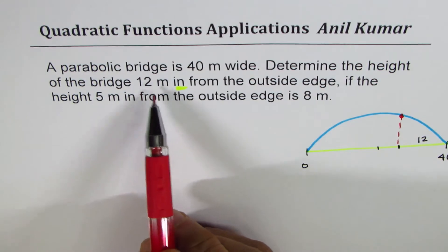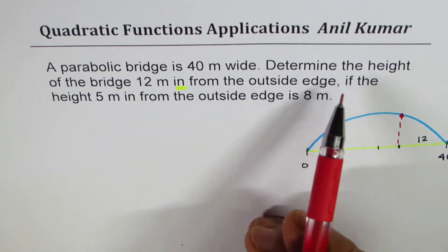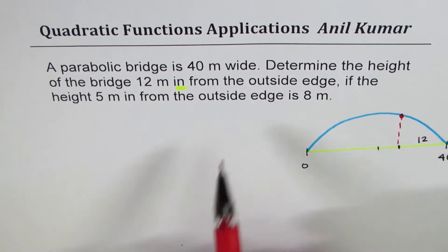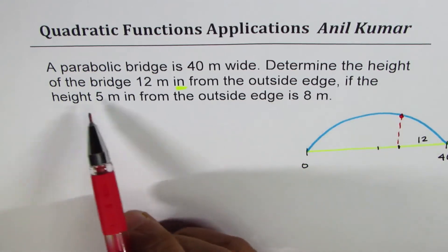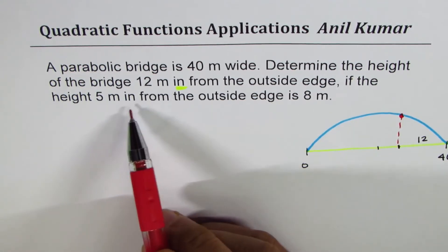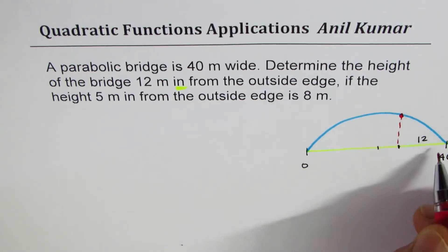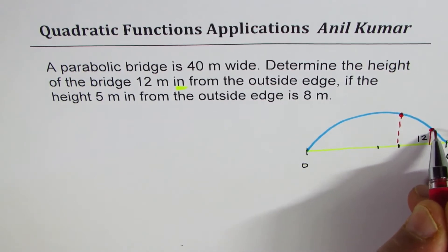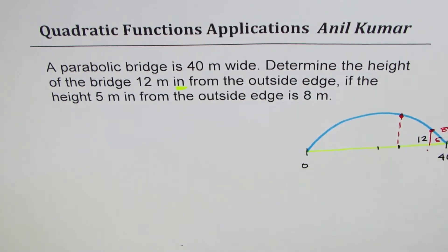Determine the height of the bridge 12 meters in from outside edge. If the height 5 meters in from outside edge is 8, so if 5 meters in is 8, then this point is at the height of 8 meters and this is 5 from there.